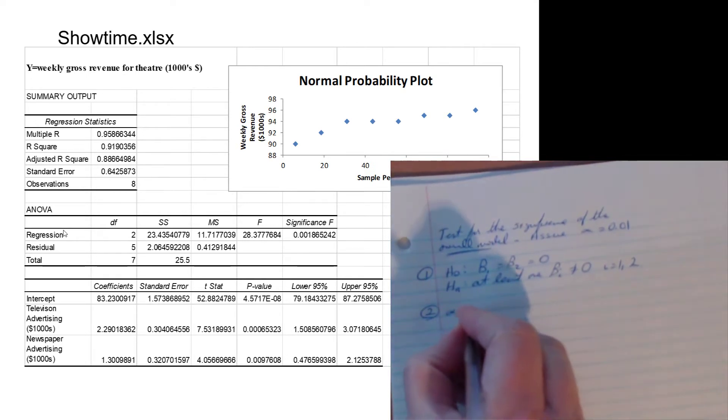Step two: we have an alpha of 0.01. Step three: we're testing for overall model significance, so we know F test is what we're all about - it's like the hokey pokey, it's what it's all about. So we have an F test of 28.38.